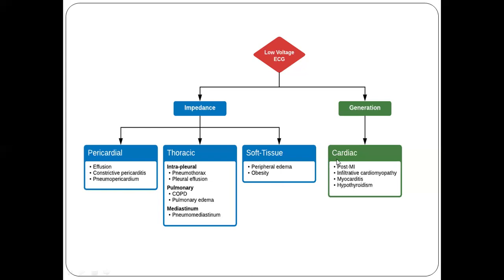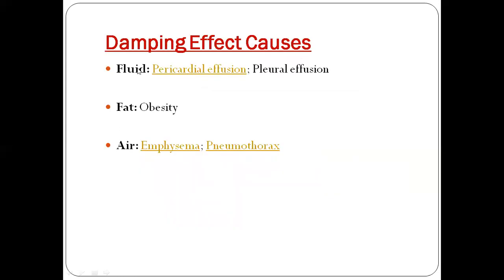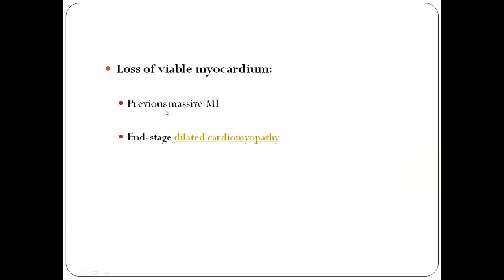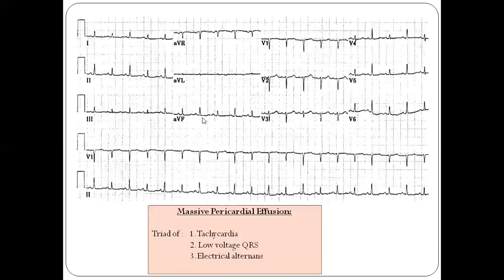Cardiac causes include loss of viable myocardium post-MI, hypothyroidism, and cardiomyopathy. For the damping effect, fluid causes are pericardial effusion or pleural effusion; fat causes include obesity; and air causes include emphysema or pneumothorax. Infiltrative causes include sarcoidosis, amyloidosis, myxedema, and scleroderma. Dilated cardiomyopathy can also lead to loss of viable myocardium.